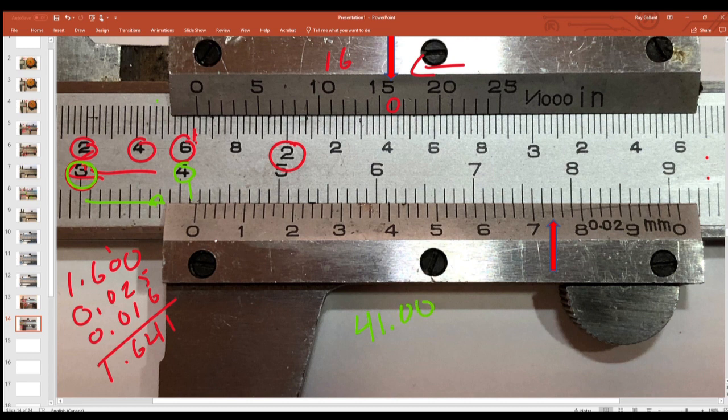Then each one of these lines along here equals 0.02 millimeter. So that would be 0.2, 0.4, 0.6, 0.8. That would be 0.1.